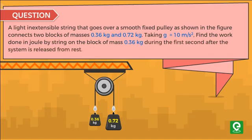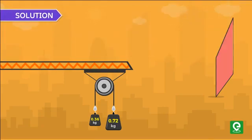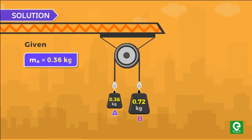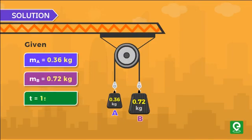This question was asked in JEE Main 2009 exam. Solution: We are given mass of block A equal to 0.36 kilograms and mass of block B equal to 0.72 kilograms. Time given is equal to one second, and we have to find the work done by the tension in the string connecting blocks A and B.